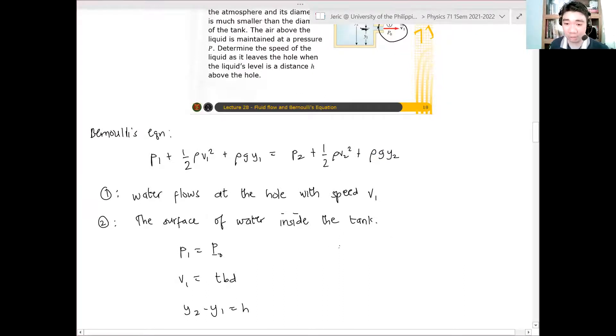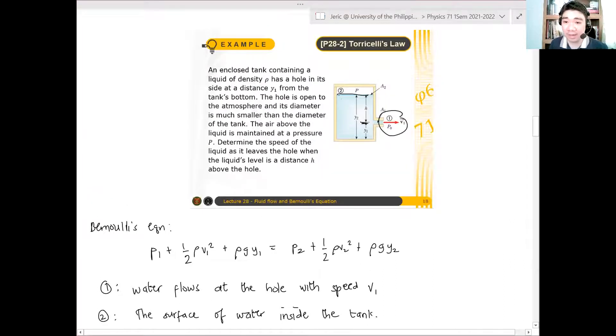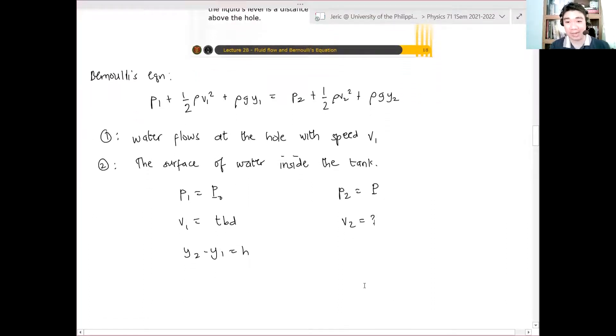What about P2? What's the pressure at the surface of the tank? We are assuming that the tank is closed. Therefore, the pressure here is given in the problem by some capital P. What about V2? We don't know V1, we don't know V2. But remember, we know that V1 and V2 are related.